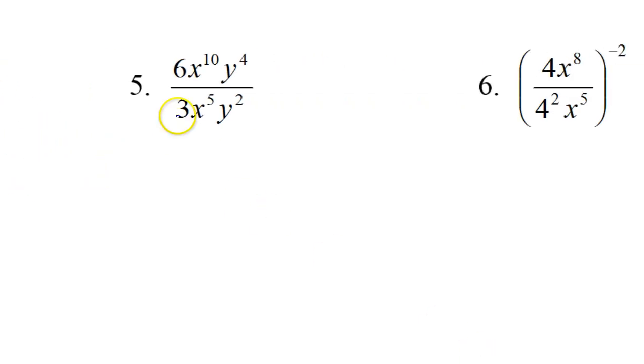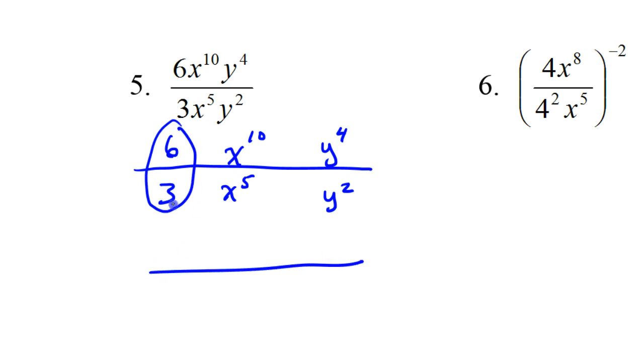On number 5, you can sort of look at this like three separate little problems. I have 6 over 3, I have x to the tenth power over x to the fifth power, and I have y to the fourth power over y squared. I haven't really changed the problem yet. It's just a way of looking at it. Now, 6 over 3, first of all, 6 divided by 3 is just 2, and I'm going to put that 2 on the top.